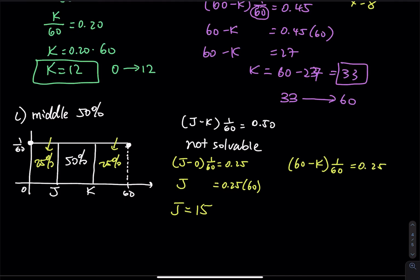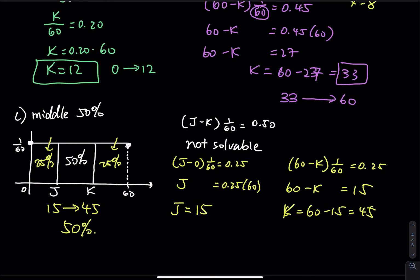Remember: big minus small — probability cannot be negative. So J equals 0.25 times 60 equals 15. And K equals 60 minus 15 equals 45. So J is 15 and K is 45. From 15 to 45 you capture 50 percent of the area, meaning the probability that a student can answer a quiz question between 15 and 45 seconds is 50 percent.